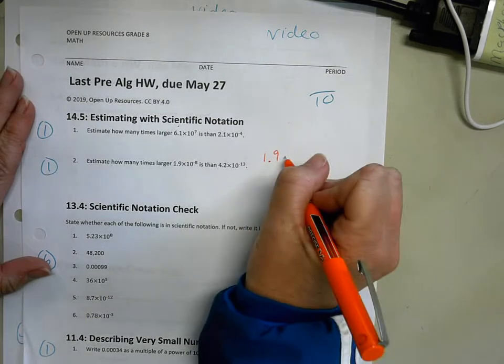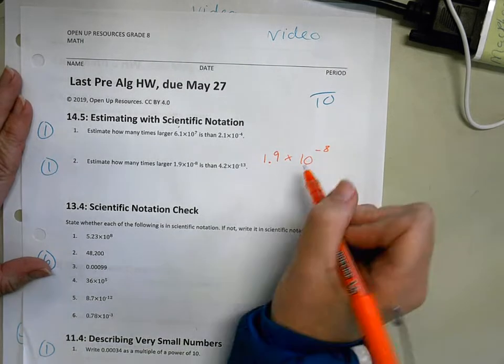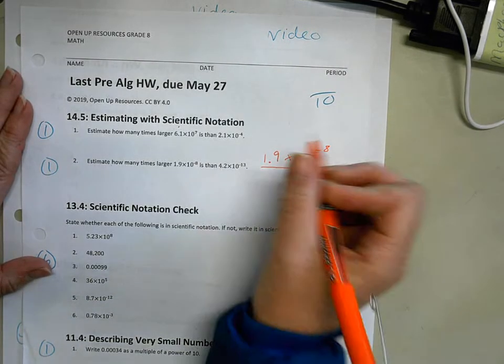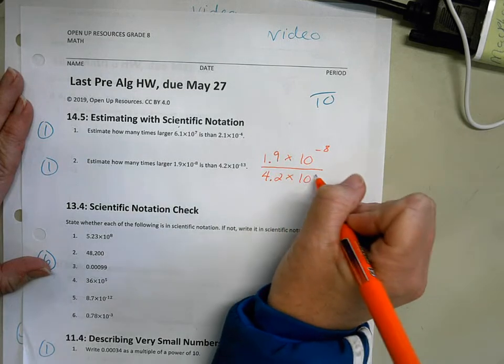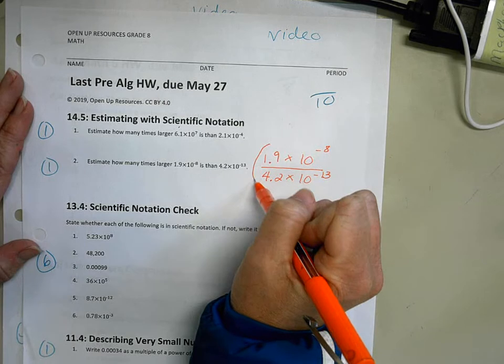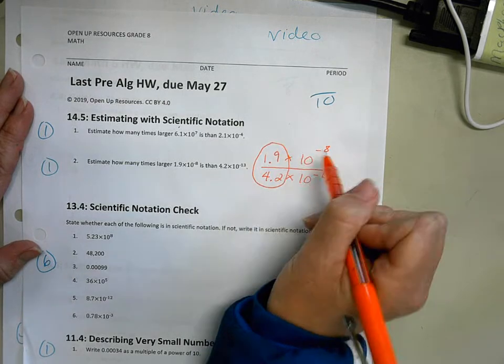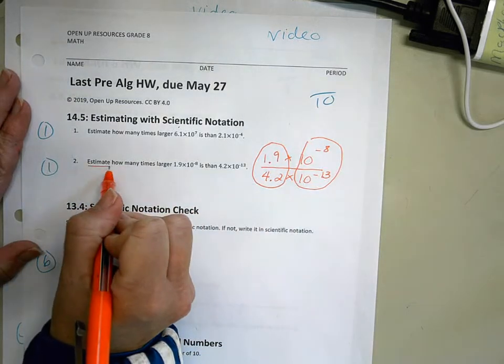So since I want to know how many times larger it is, that means this is a division problem. So 1.9 times 10 to the negative 8 divided by 4.2 times 10 to the negative 13. So I know in division, I'm going to divide my first terms, and then I'm going to divide my powers of 10. And it says estimate.